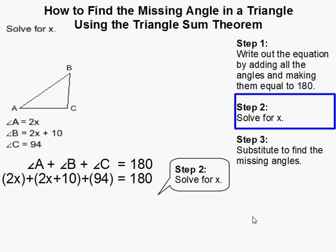Then we need to solve for x. So the first thing I did here was combine like terms. I have two x terms here, so that's 2x and 2x. You combine that, you get 4x. 10 plus 94 is 104.